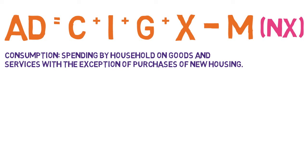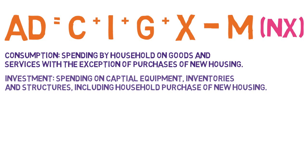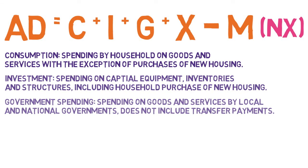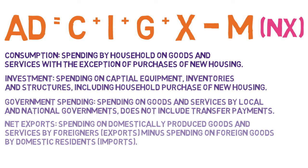C represents consumption, which is spending by households on goods and services with the exception of purchases of new housing. New housing goes into the second component: investment, which is spending on capital equipment, inventories, and structures, including household purchases of new housing. Government spending is spending on goods and services by local and national governments but does not include transfer payments such as unemployment benefit or care allowance. Finally, net exports looks at spending on domestically produced goods by foreigners, which is exports, minus spending on foreign goods by domestic residents, which is imports.